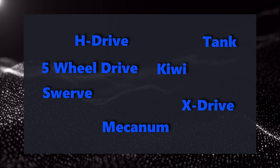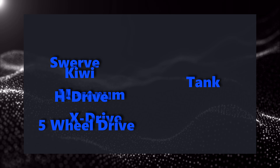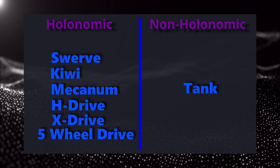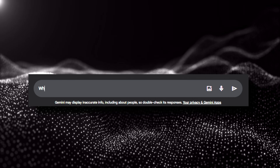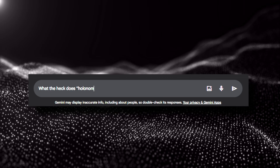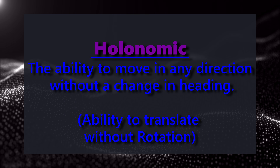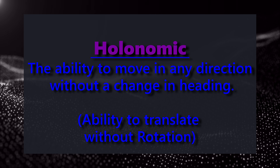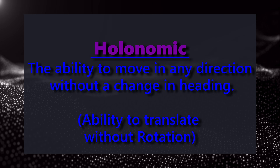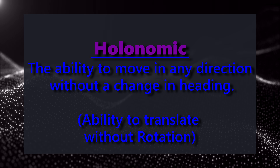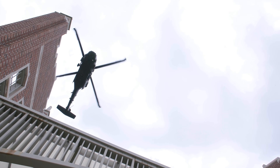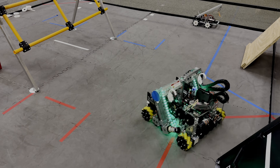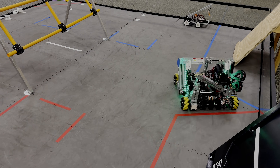When used in a full drivetrain properly, mecanum can drive in any direction. All of the main drivetrains can be split into two groups: holonomic and non-holonomic. Holonomic basically means the ability to drive in any direction without a change in heading, otherwise known as the ability to translate in any direction without rotation. Helicopters and drones are among the only truly 3D holonomic vehicles, but we'll be talking about 2D holonomic robots today.